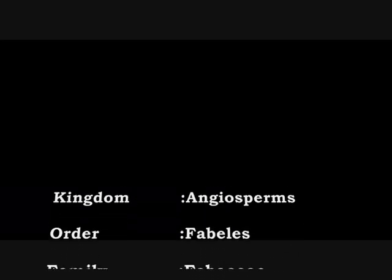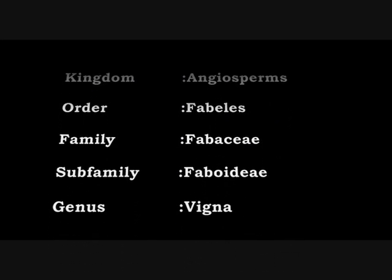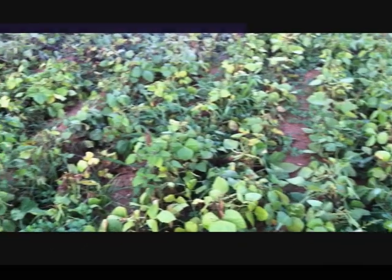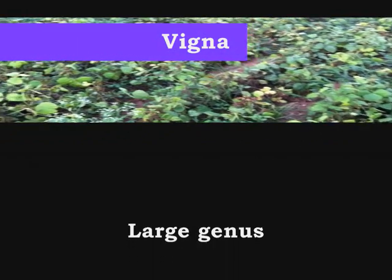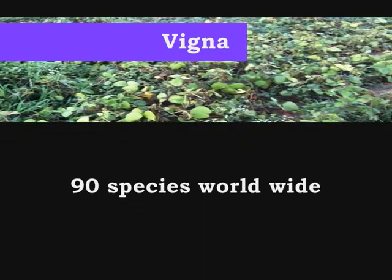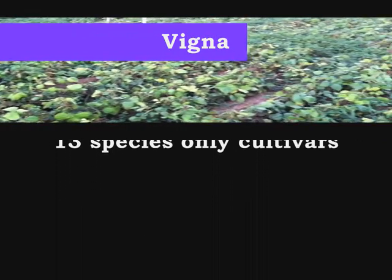Coming to the taxonomy, it is classified under the kingdom Angiosperms, the family Fabaceae, and the genus Vigna. It is a large genus having 90 species worldwide, but only 13 species are cultivars and widely known.